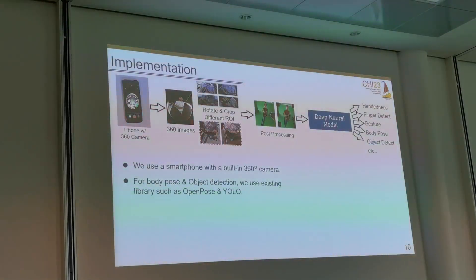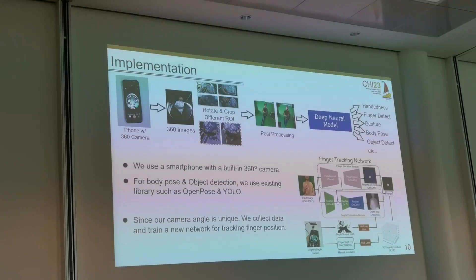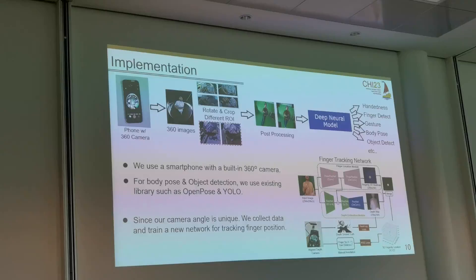Let me briefly go through the implementation. First, we obtain the 360 image from the phone, then the image is calibrated according to the user's position and cropped to different regions of interest based on the application. After further processing such as normalization and distortion fixing, the image is passed to a specific neural network model. For body posture and object detection, we utilize existing pretrained models such as OpenPose and YOLO. For finger pose tracking, since our camera is in a unique position very close to the finger, we collected new data and trained a two-stream network for 3D finger pose estimation. The network extracts a finger location heatmap from the input, and with an autoencoder network, estimates the depth. The final 3D finger joint position is estimated from the 2D location and the 3D depth map.